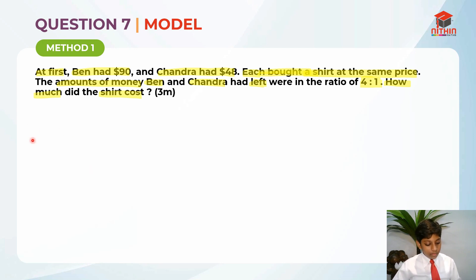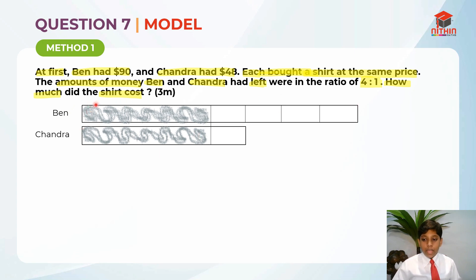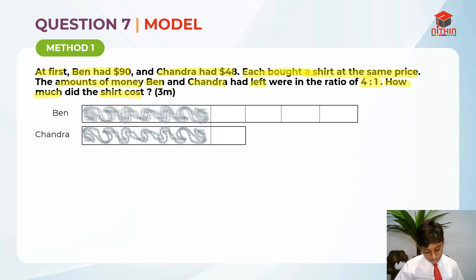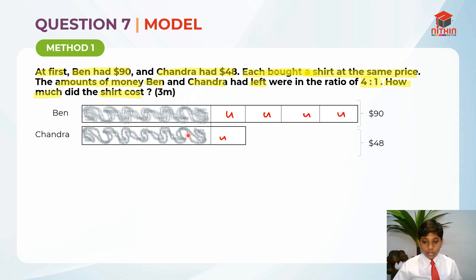First we draw Ben and Chandra. Ben at first had $90, so that's $90 here. After Ben and Chandra spent an equal amount of money on a shirt, their amounts are in ratio 4 to 1 — so Ben had 4 units here and Chandra had 1 unit here. Ben had $90 at first and Chandra had $48 at first, and after spending equally they have a ratio of 4 to 1, which is why there are 4 units here and 1 unit here.